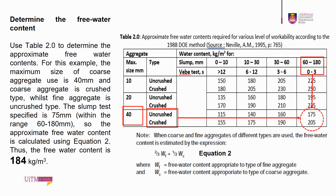Next, use table 2.0 to determine the approximate free water contents. For this example, the maximum aggregate size is 40 mm and coarse aggregate is crushed, whilst fine aggregate is uncrushed. The slump test specified is 75 mm, within the range 60 to 180 mm, so the approximate free water content is calculated using equation 2. Thus, the free water content is 184 kg/m³.